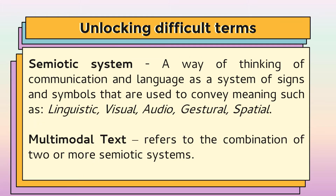Unlocking Difficult Terms. Semiotic System: a way of thinking of communication and language as a system of signs and symbols that are used to convey meaning, such as linguistic, visual, audio, gestural, and spatial.